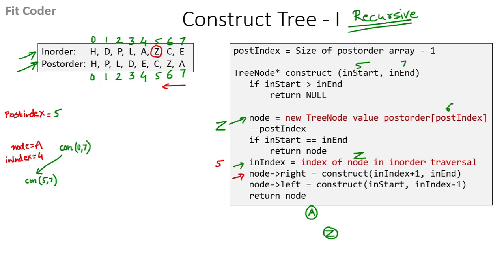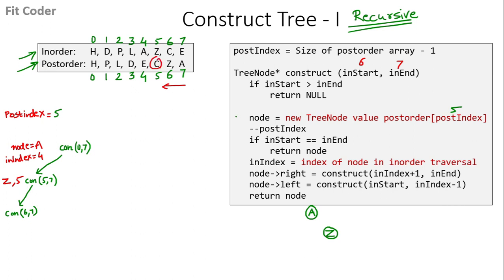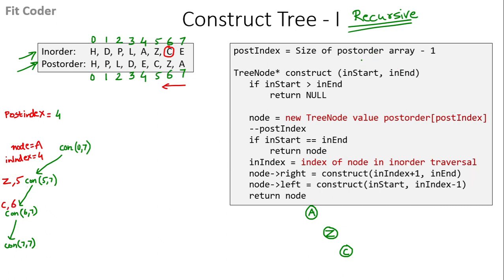From construct(5, 7) we call construct(6, 7). inStart is 6 and inEnd is 7. We create a new tree node with the 5th index of the postorder array, which is C. We decrement postIndex so it becomes 4. We search C in the inorder traversal — the index is 6. We call construct(7, 7) for the right of C. In that call, we create a new tree node with the 4th index of the postorder array, which is E. We decrement postIndex to 3. Both start and end equal 7, so we return E.